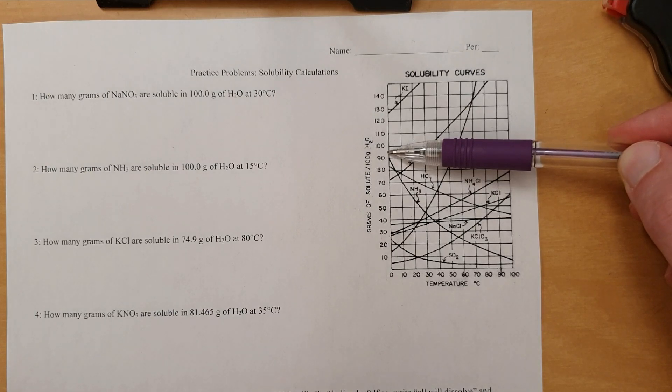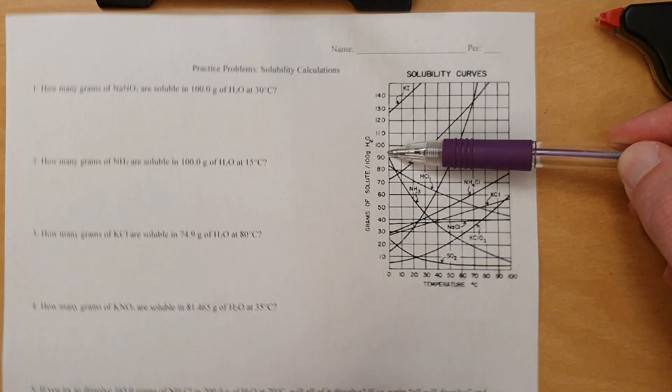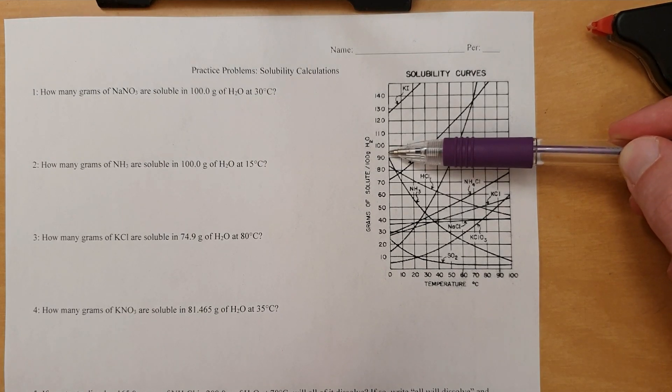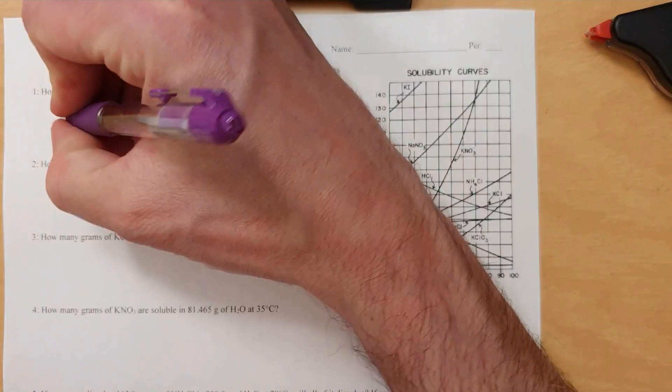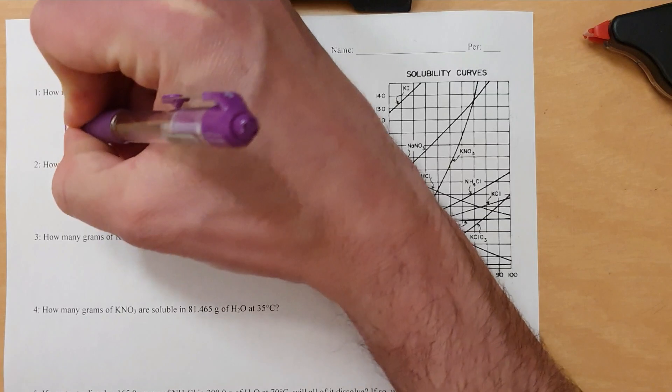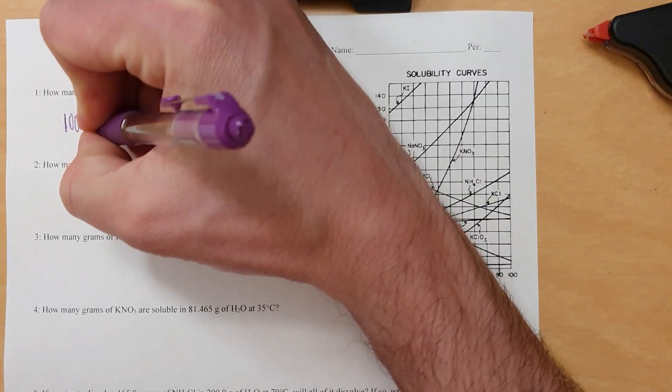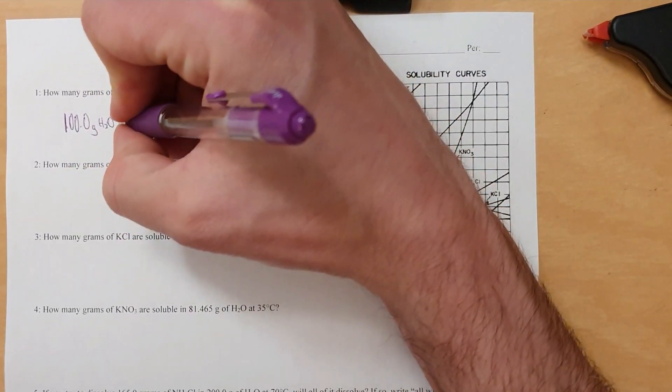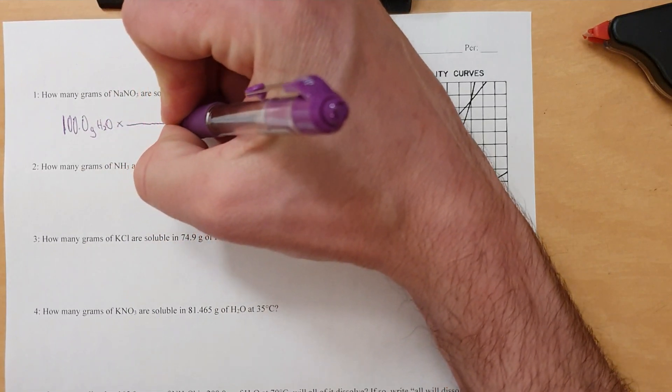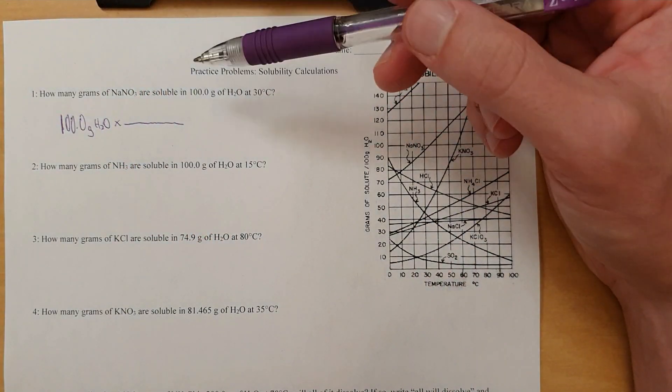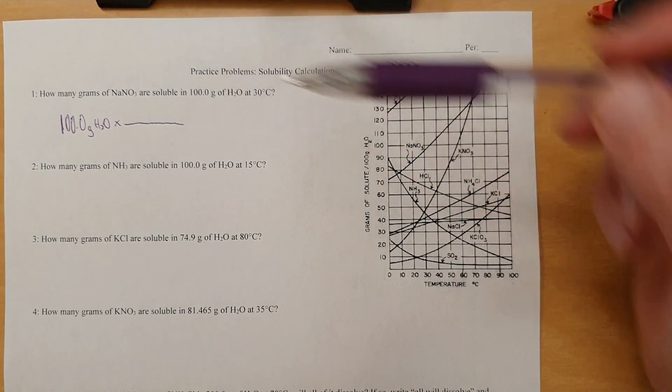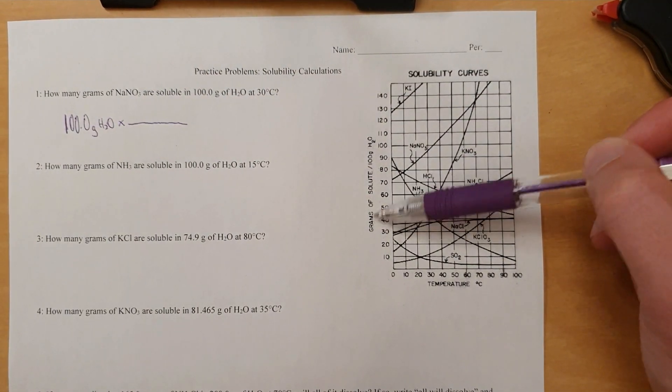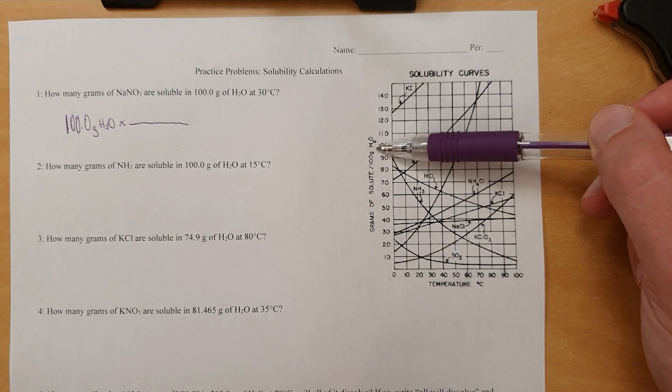However, that doesn't count as showing work. So it's not just enough to say 94 grams is soluble. How do you actually show the work? And the answer is this. You're given the grams of water, so you write that down. 100.0 grams of water. Multiply it by a conversion factor. What is the conversion factor? It's the relationship between this and water.